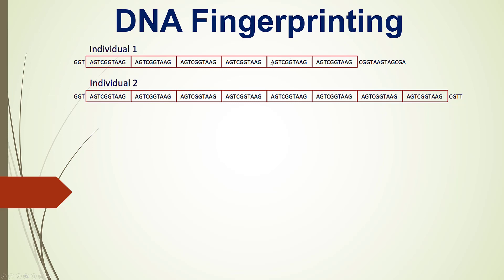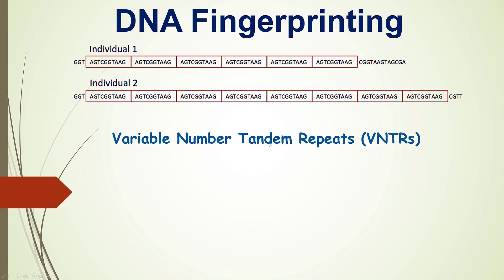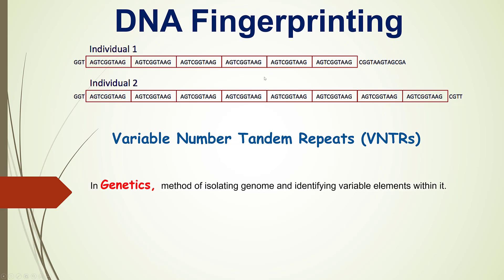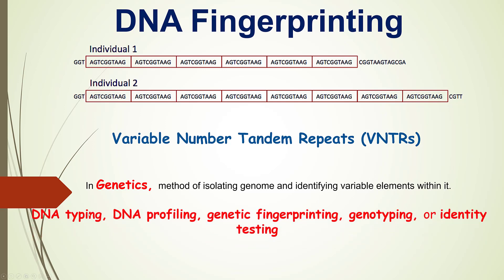These repeats are known as VNTRs — variable number tandem repeats. DNA fingerprinting is a method of isolating the genome and identifying variable repeats. It is also known as DNA typing, DNA profiling, genetic fingerprinting, genotyping, or identity testing.